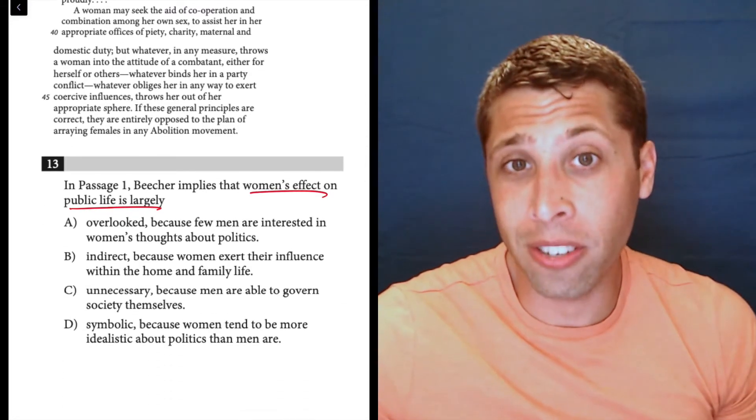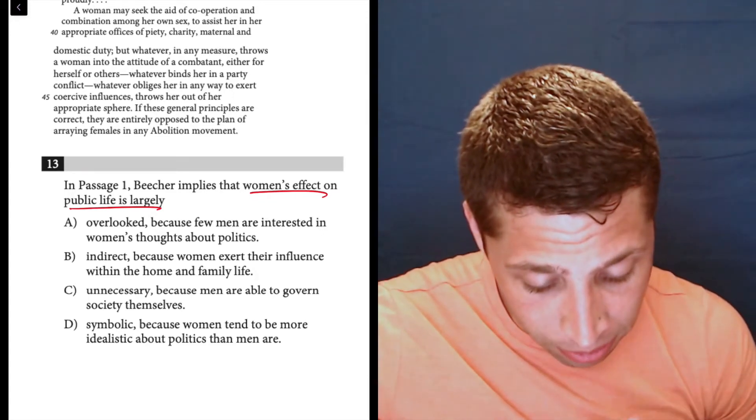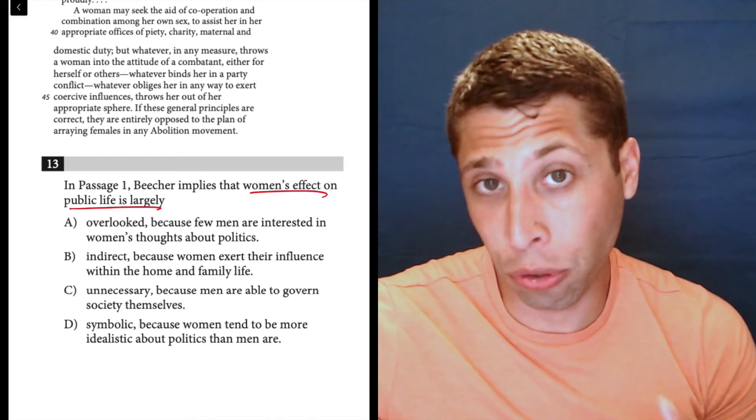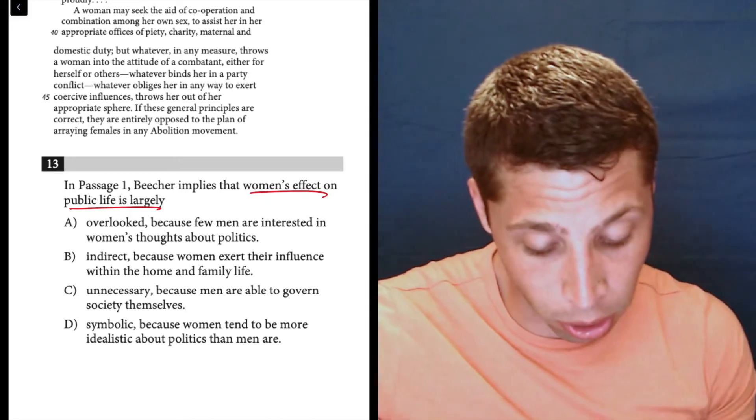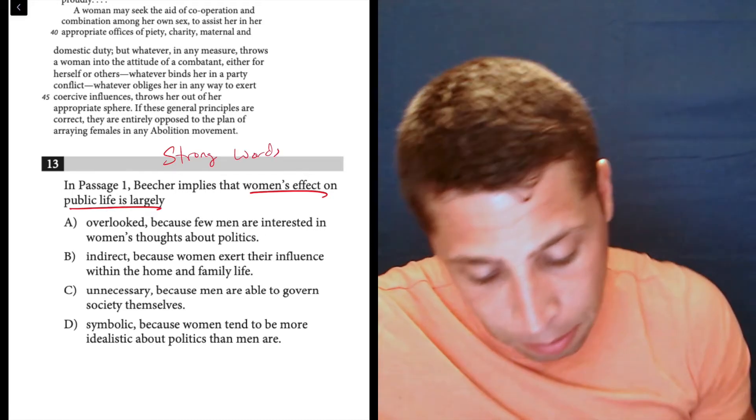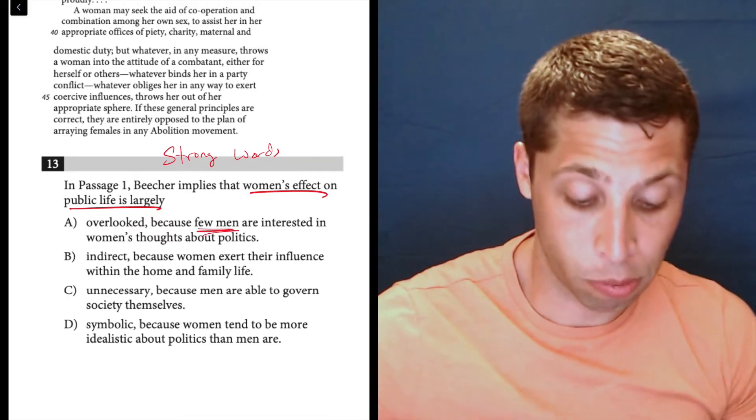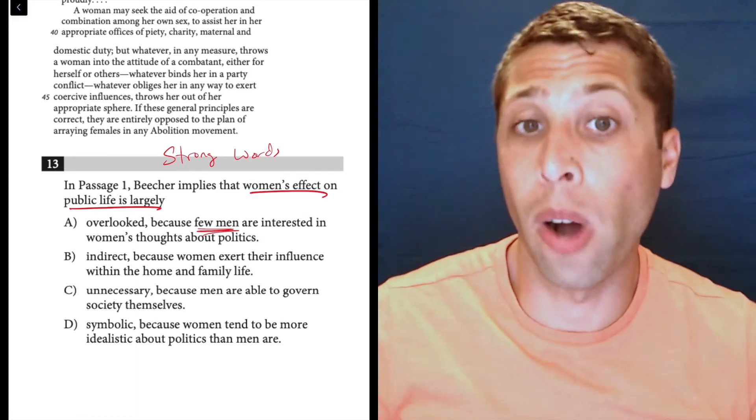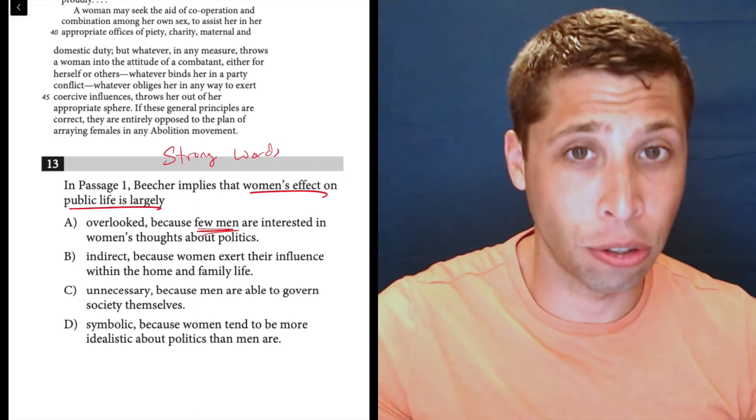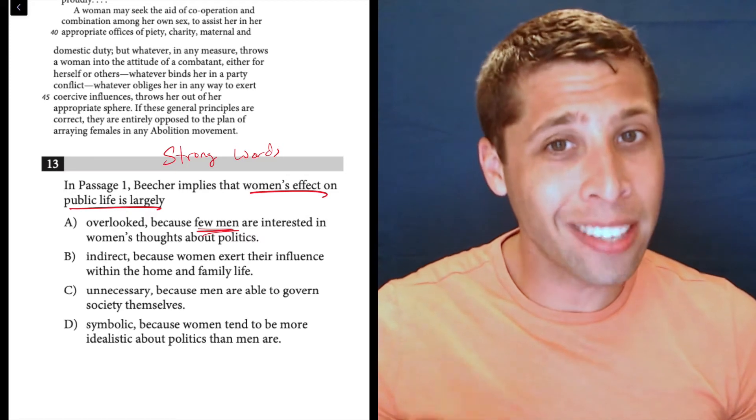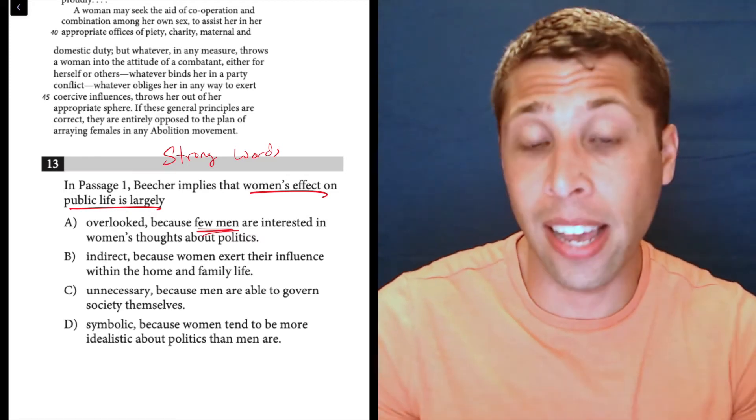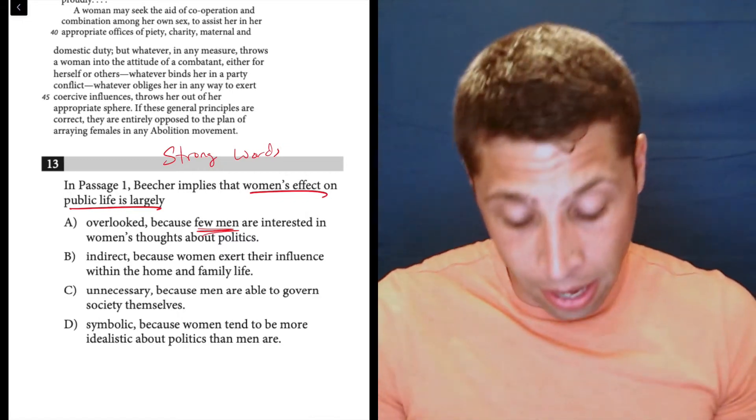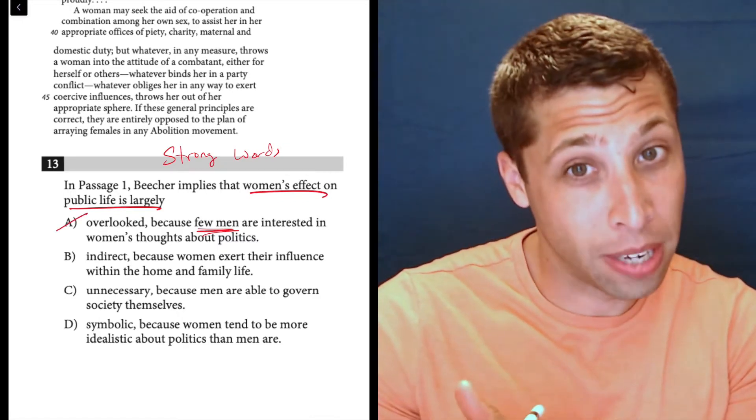So what, we can also use the choices now to kind of better sort through what we just read. Women's effect in public life is largely overlooked because few men are interested in women's thoughts about politics. Well, there's an element of truth to this based on what she's saying, but there's a really strong word that bothers me here. And that's going to cause some problems for us in some of these choices. Few men are interested in women's thoughts about politics. We never get some sort of quantifying of these, of men versus women and who thinks what. So anytime we see words that quantify things in answer choices, we need to be suspicious. It's not always wrong, but it's something that we need to prove. And so what's happening here is we just never really get this sense that a lot of men or very few men are going to be listening to what the women have to say. It's just never said. So we can't pick this choice, even if that part overlooked is kind of tempting. Let's keep going.